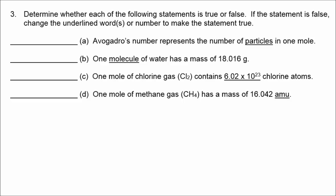In number three, we have some true-false statements. The first one, Avogadro's number represents the number of particles in one mole. That's true. But for the second one, one molecule of water is not going to have a mass of 18.016 grams. That's one mole of water. Grams is a much larger mass unit. If it was an individual molecule of water, it would have been 18.016 AMUs.